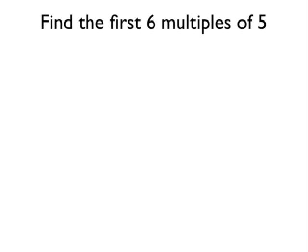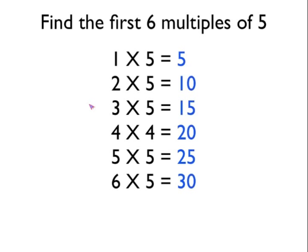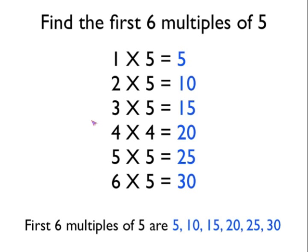Let's have a look at how we'd find the first six multiples of five. So what you do is you do one times five, two times five, three times five, and so on. The multiples of five are just all the numbers in the five times table, and we want the first six of them, so the first six multiples of five are five, ten, fifteen, twenty, twenty-five and thirty.